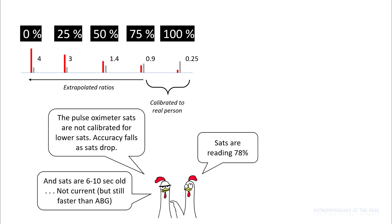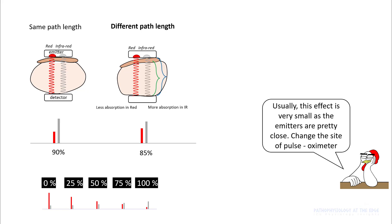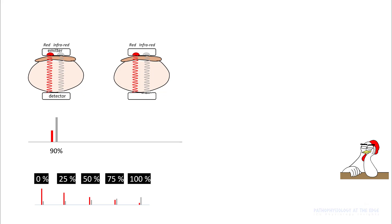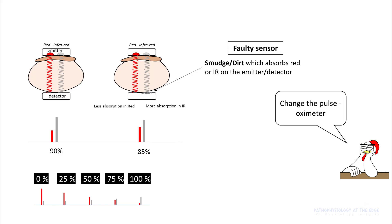The SaO2 readings are around 6 to 10 seconds old. So if you are dealing with a rapidly changing situation, your SaO2 is not current and your patient may be more hypoxemic than you think. Different path lengths can have different absorption in red and infrared and can affect your saturation — in these cases, change the site of the pulse oximeter and see if readings improve. A faulty sensor can also have differential absorption, giving rise to false readings, so change your pulse oximeter.